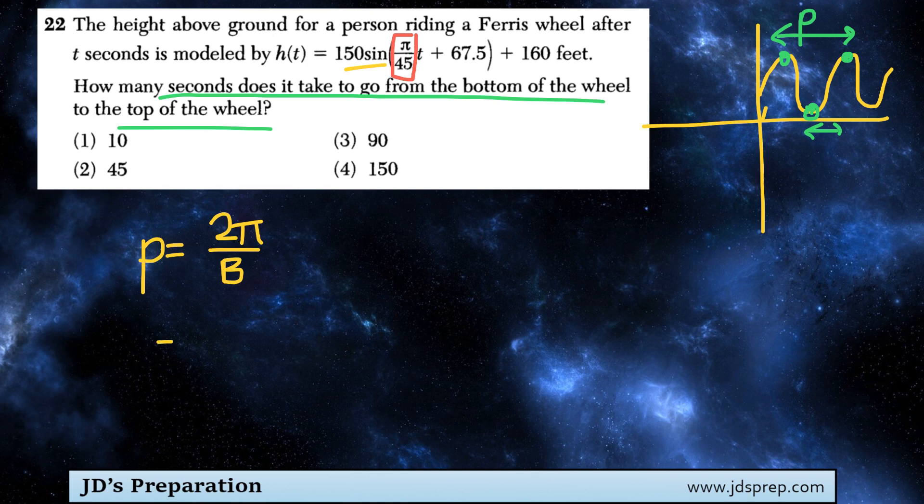So the period is going to equal 2π over our b value of π/45. Now this is a pretty confusing thing to solve, so I'm going to rewrite it using the division symbol. So it's 2π divided by π/45.